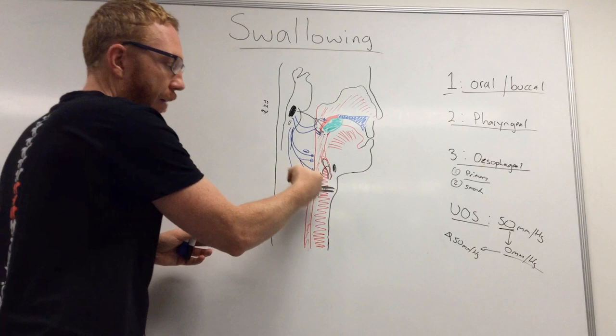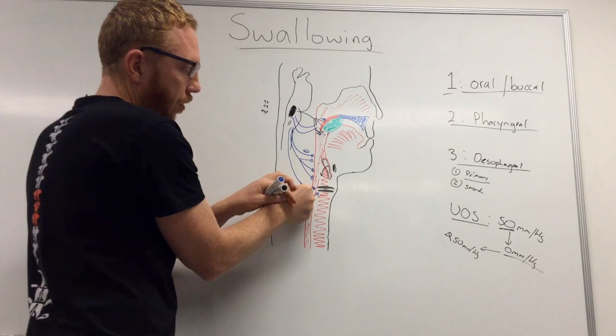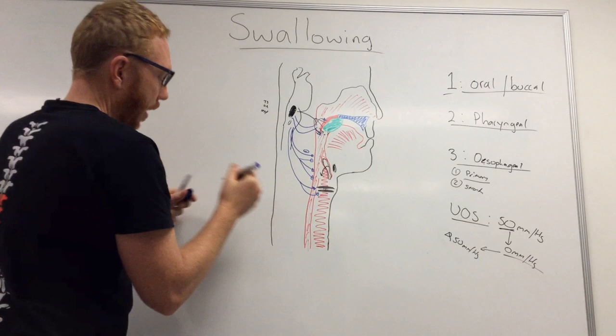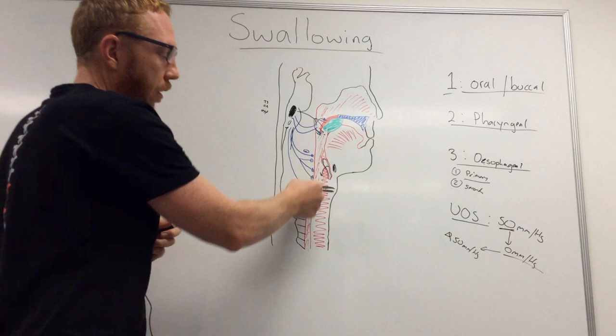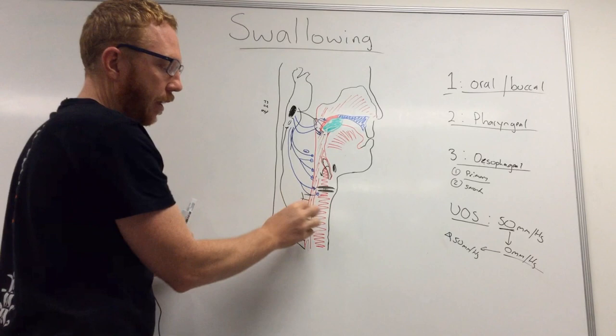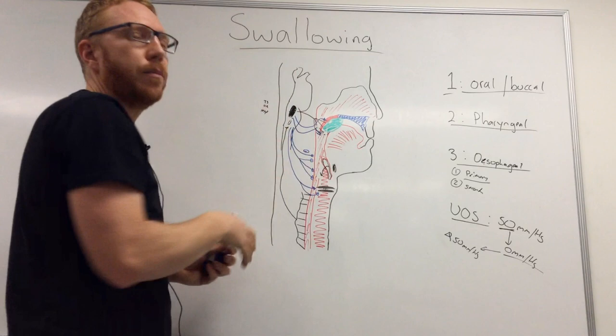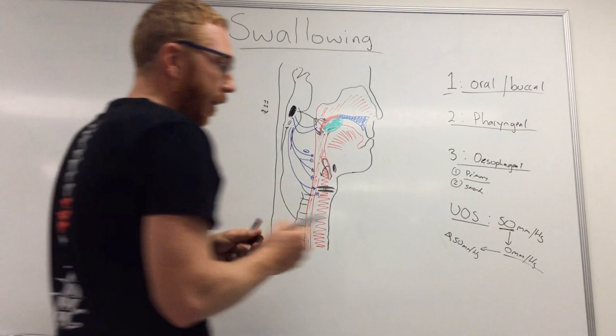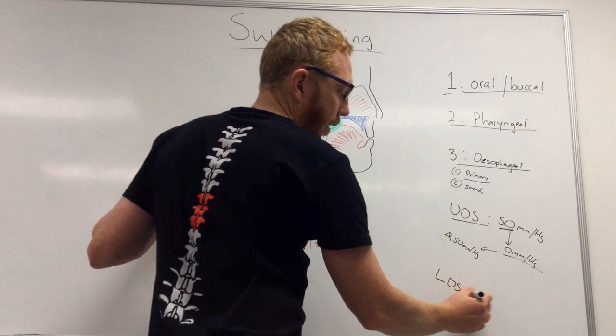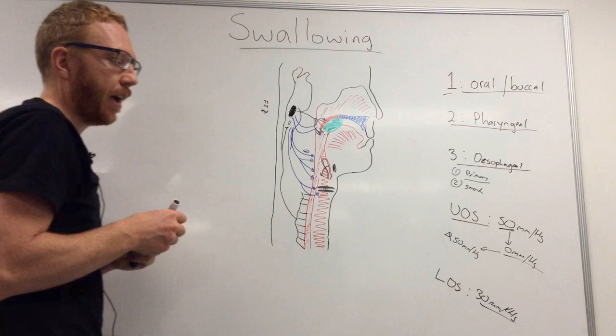That describes primary peristalsis. If the bolus is not fully propelled through and remains in the esophagus, vagal afferents sense the stretch and relay back to the brainstem. The brainstem then generates a secondary peristaltic wave to push the residual bolus through and clear it down into the stomach.